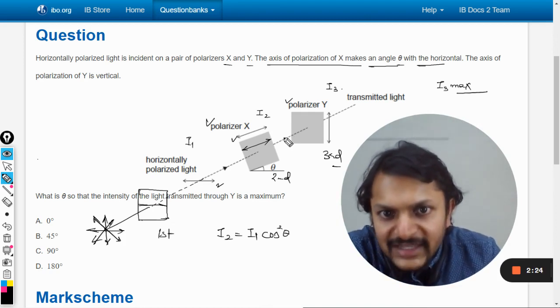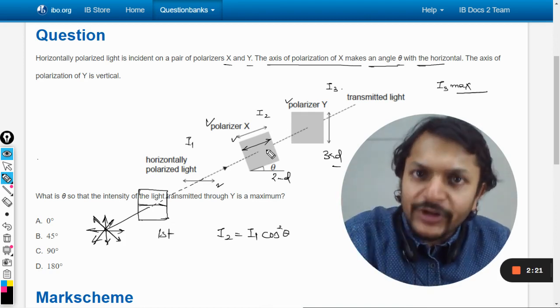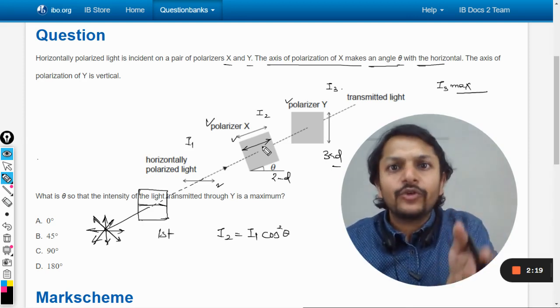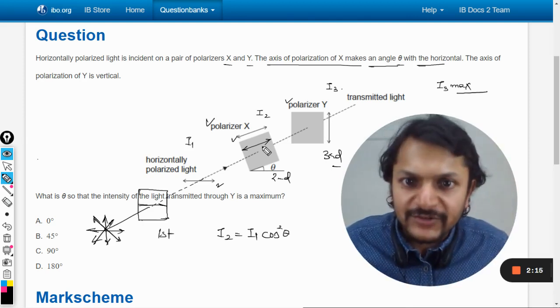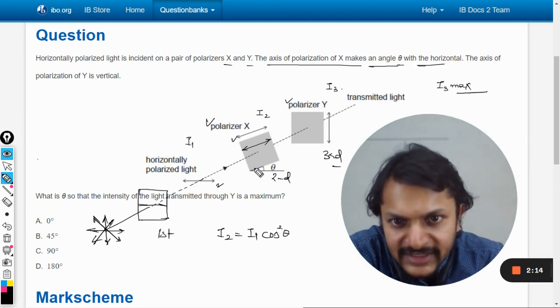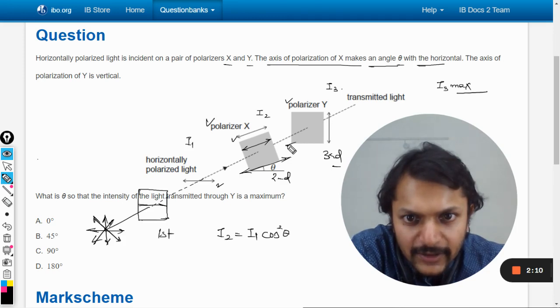But now the new light that would be coming out of the polarizer X would be having the polarizer axis parallel to the axis of the polarizer X. So it would be like this. It would be like this. So that can be taken as already like this.